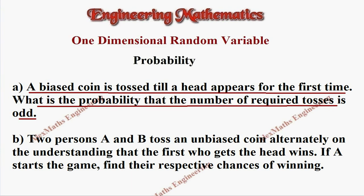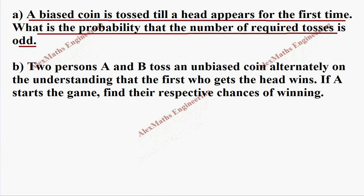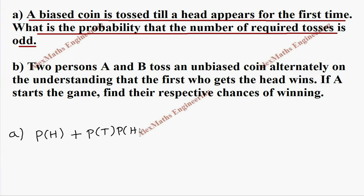When we toss for the first time, it is possible to get head at the first time itself. We toss till head appears for the first time, after that we don't toss. Or, when I toss for the first time and don't get head — I get tail — then I go for the second toss and can get head. But the question asks: what is the probability that the number of required tosses is odd?